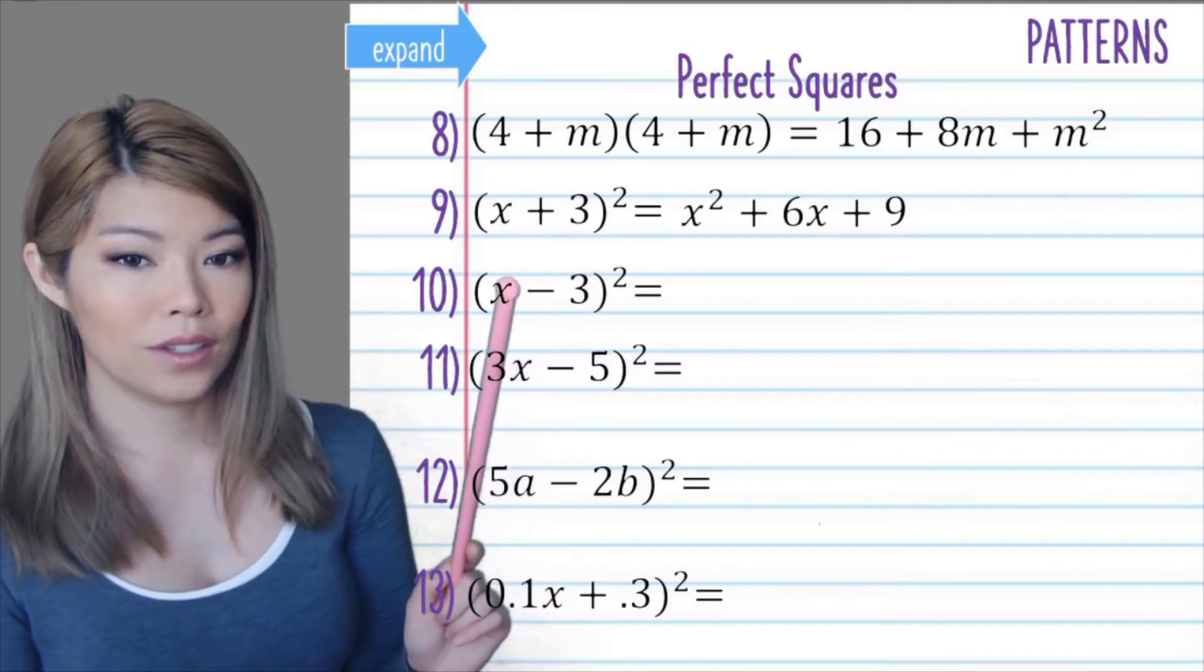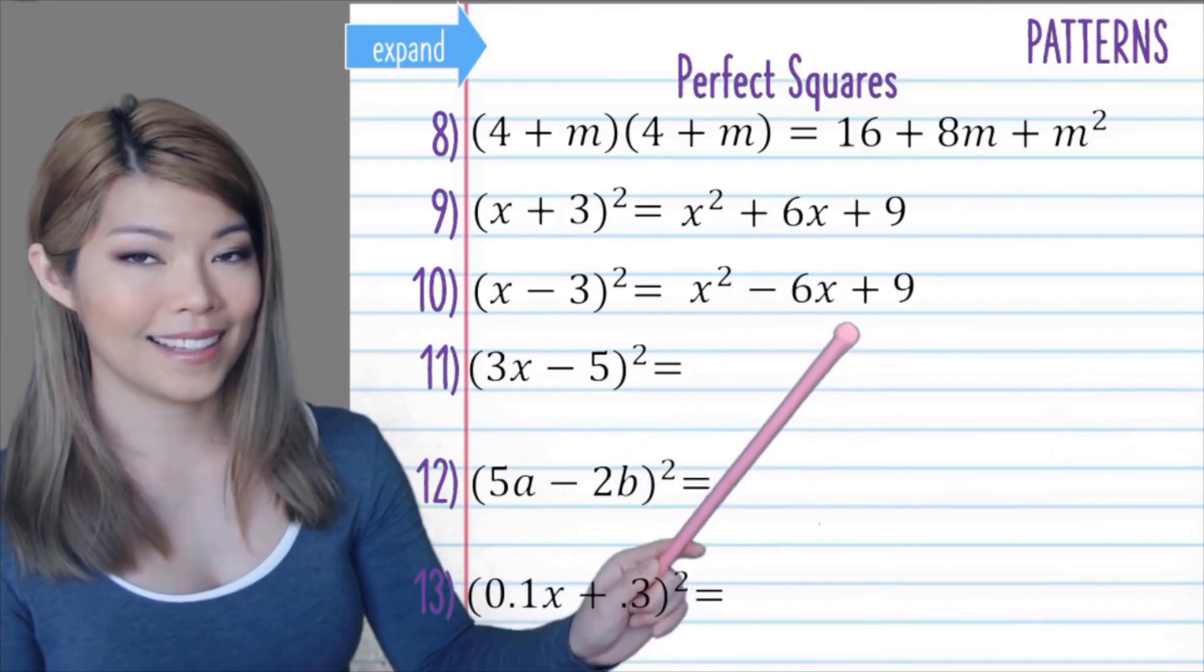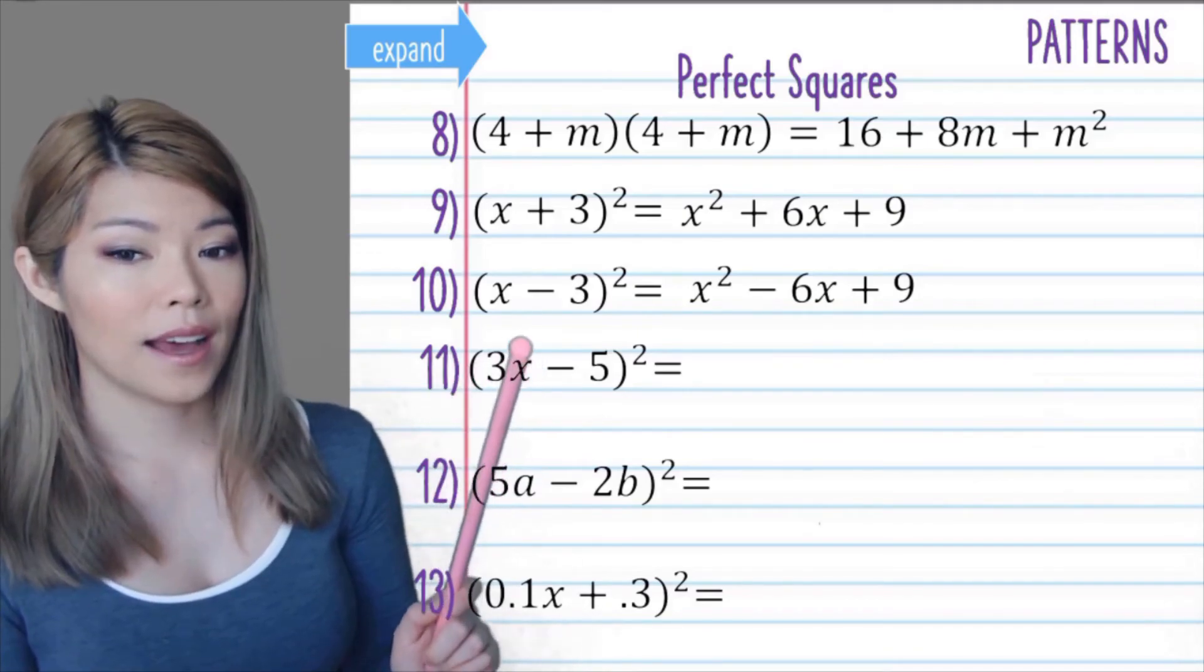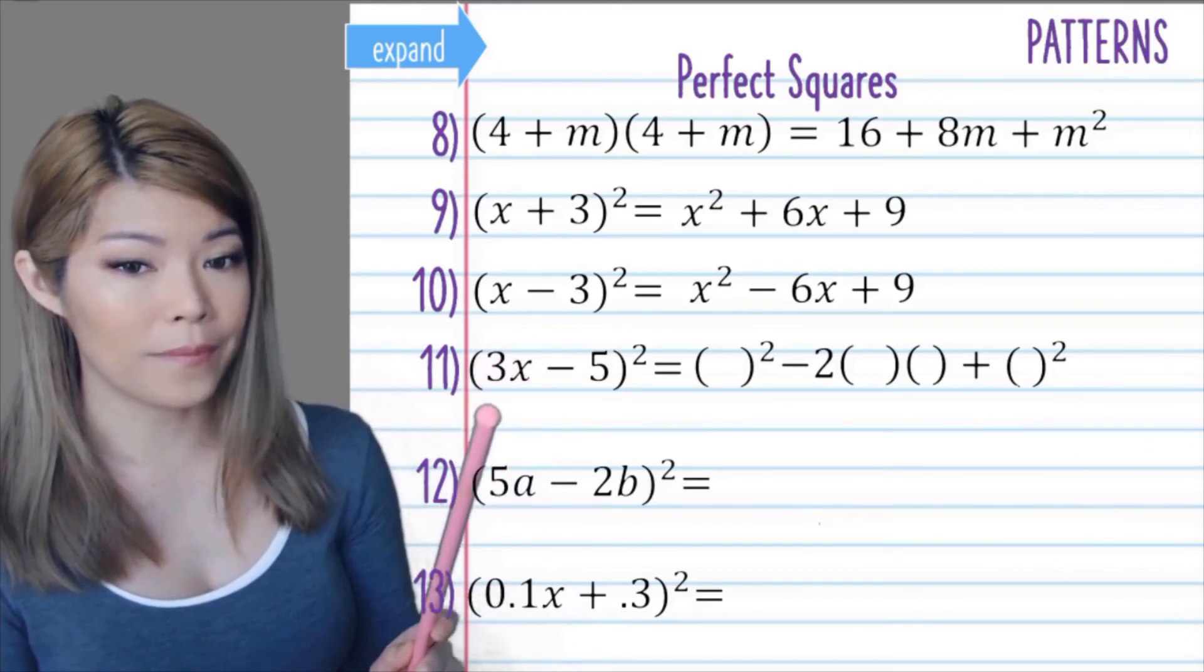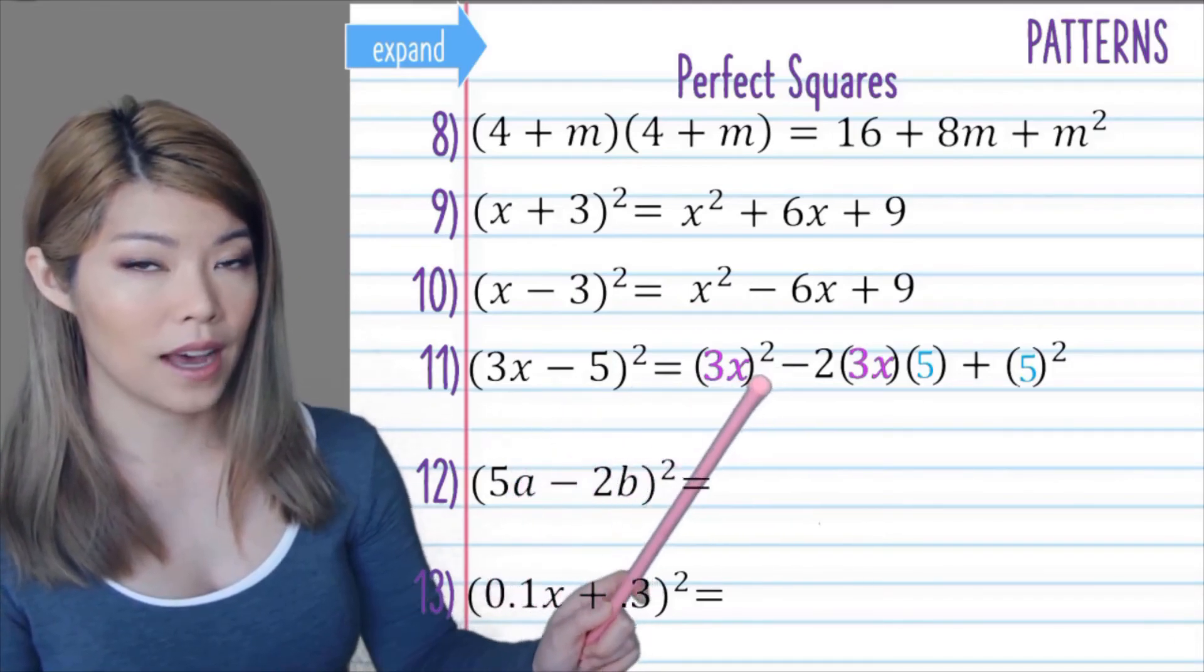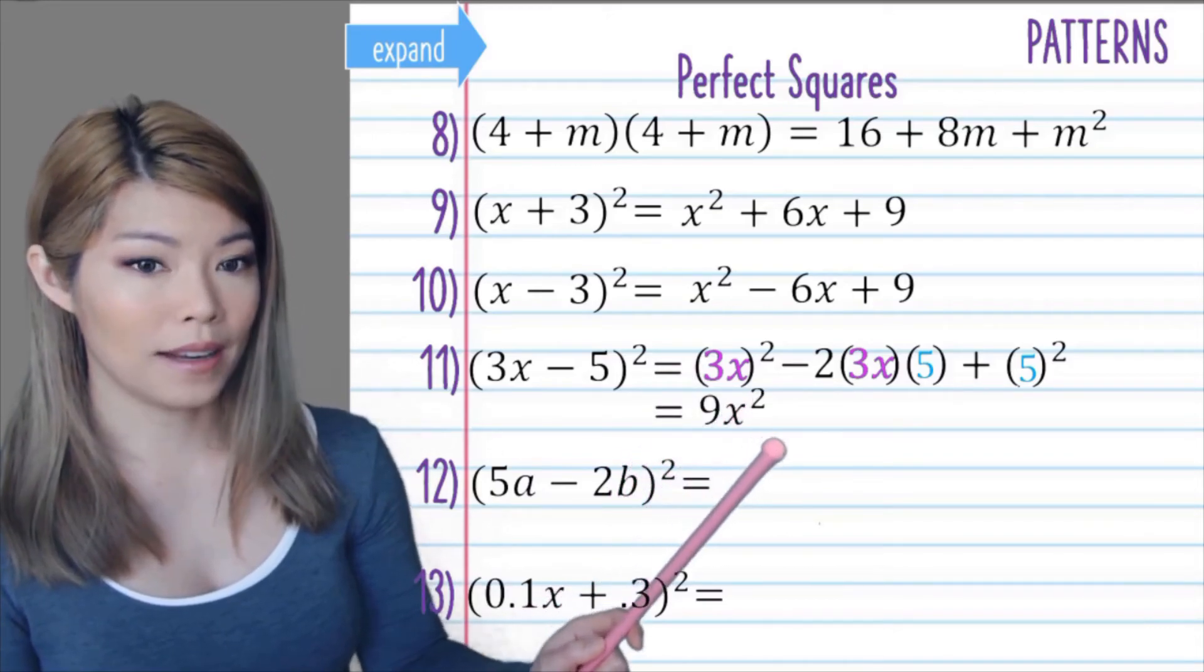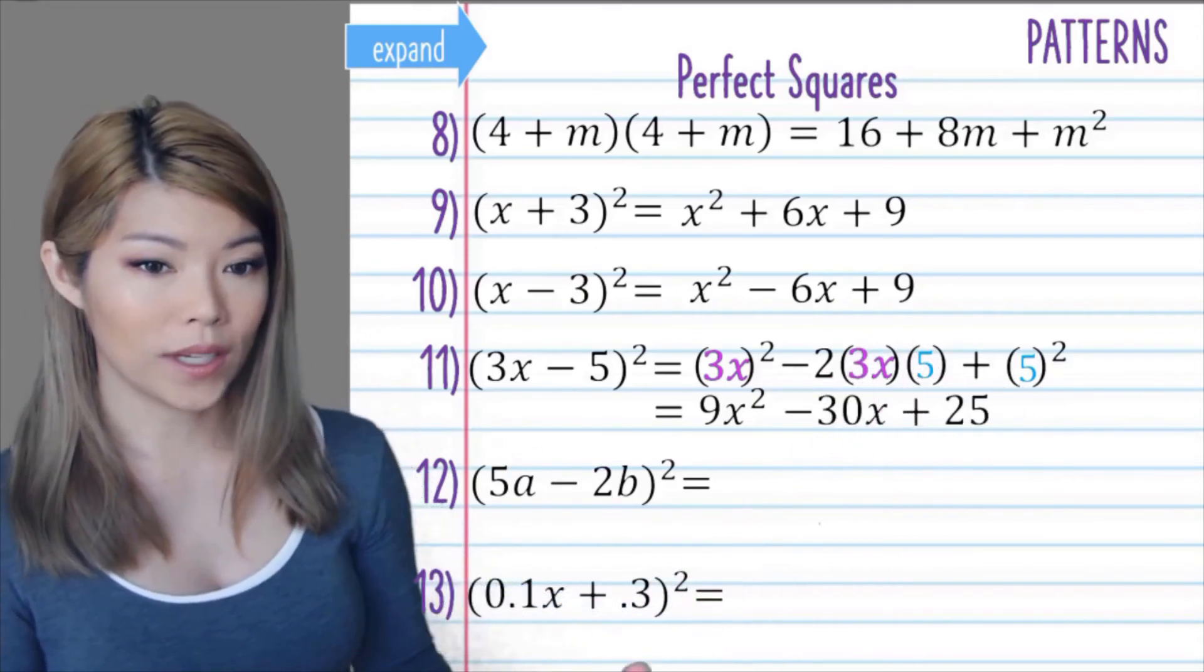Next one, this time it has a negative, so it will be x squared minus 6x plus 9. This one, the first term is 3x and now we have to do 3x squared, which is 9x squared. Use brackets, otherwise you might forget to square the 3. So 3x in the first bracket and minus 5 in the other. So now we have 9x squared minus 2 times 3 is 6 times 5 is 30x plus 25.